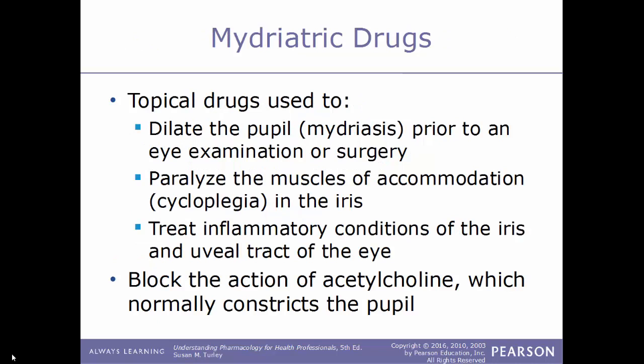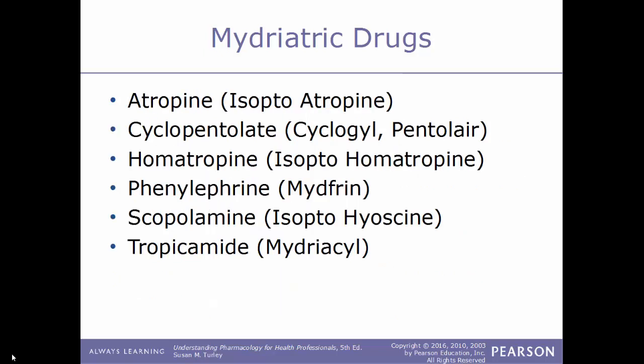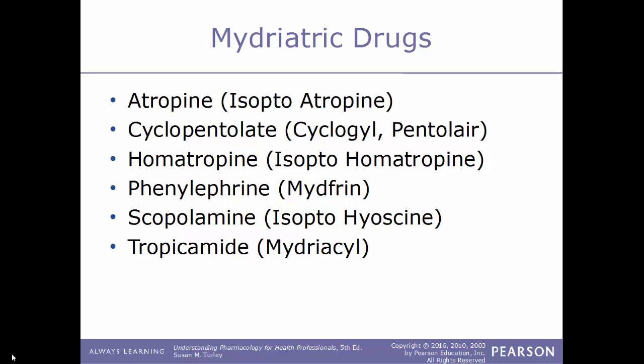Now we'll talk about mydriatic drugs. These are topical drugs used to help dilate the pupil, especially right before eye surgery or during an eye examination. They work by paralyzing the muscles of accommodation within the iris — this is called cycloplegia. These drugs are also used to treat inflammatory conditions of the iris and of the uveal tract, and they block the action of acetylcholine, which would normally constrict the pupil. Examples include atropine, also known as Isopto Atropine; cyclopentolate, also known as Pentolair or Cyclogyl; homatropine, also known by the trade name Isopto Homatropine; phenylephrine, also known as Mydfrin; scopolamine, also known as Isopto Hyoscine; and tropicamide, also known as Mydriacyl.